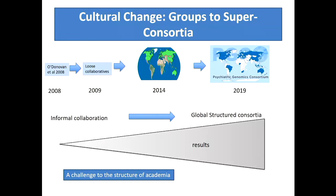Since that first study back in 2008, loose collaborations formed. We've formalized structures - by 2014 there were about 35 countries involved with lots of research groups coming together in a formal way, sharing resources. By 2019 it's about 50 countries and about 1,000 scientists. As we've pooled our resources, we've begun to find more and more.